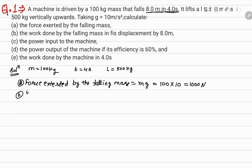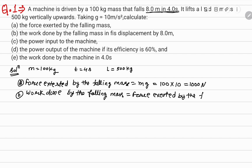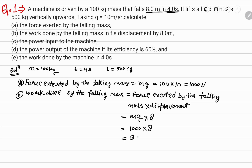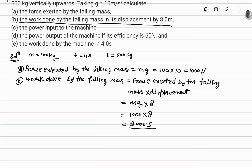Doosra humko calculate karna hai: work done by the falling mass. Work done by the falling mass is equal to force exerted by the falling mass into displacement. Force is mg, which is 1000 N, and displacement is 8 meters. So work done is 1000 into 8 equals 8000 joule.